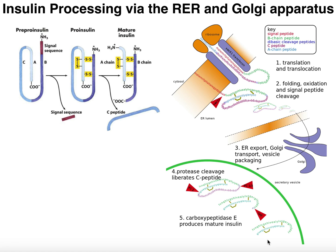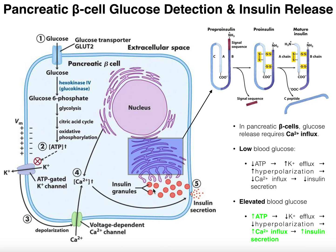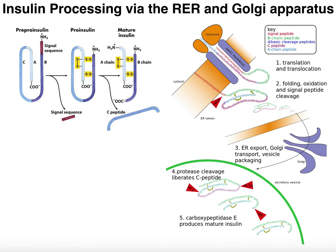Once mature insulin is accomplished, it can be released into the blood in proportion to the amount of glucose in the blood, as covered in the previous video. Remember that the initial release of insulin directly into the blood is triggered by the level of intracellular calcium — the more calcium, the more insulin released, giving a graded response. I hope you enjoyed this video and learned a lot. Please make sure to like this video and subscribe to my channel for future videos and notifications. Thank you.